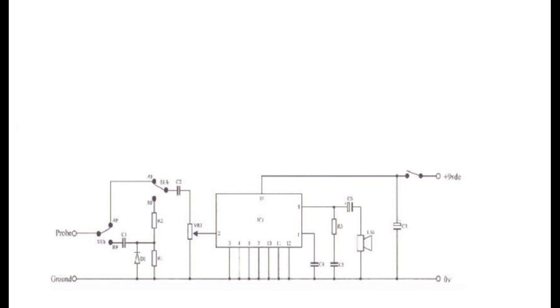It's only a 20k pot, so any signal you get up to that point is only seeing 20k to ground. Unless you have a fairly strong signal, most of the signal is going to bleed away.